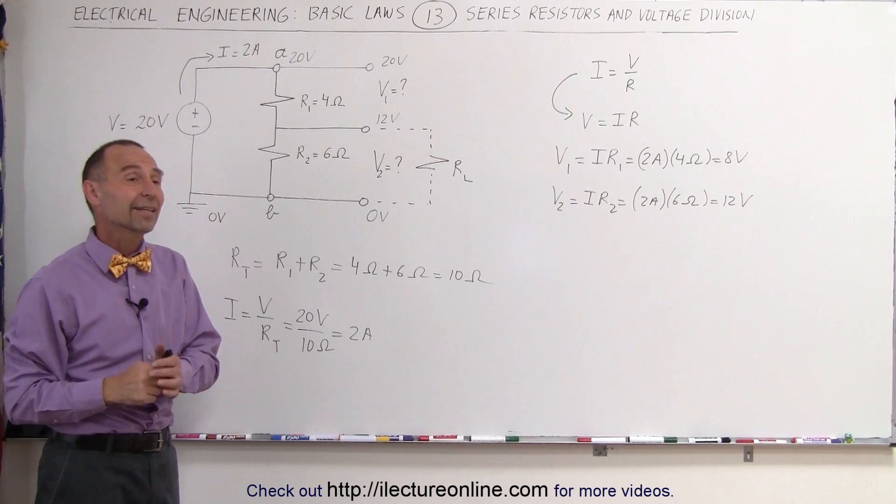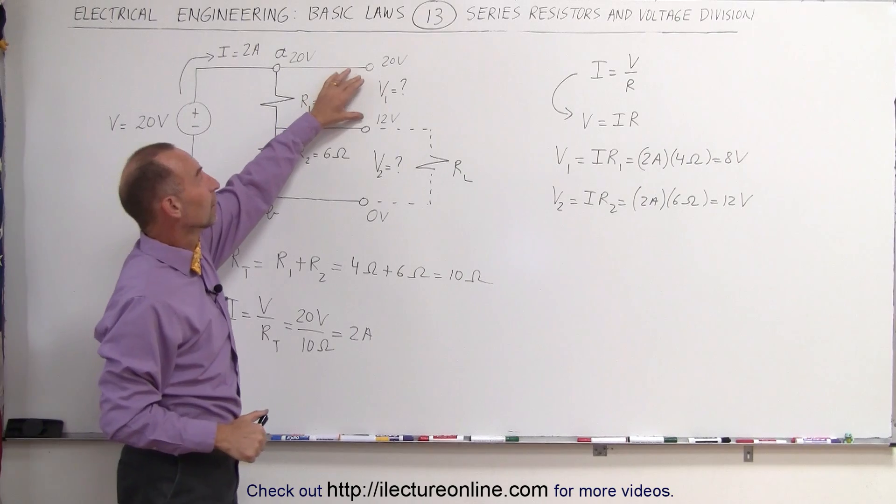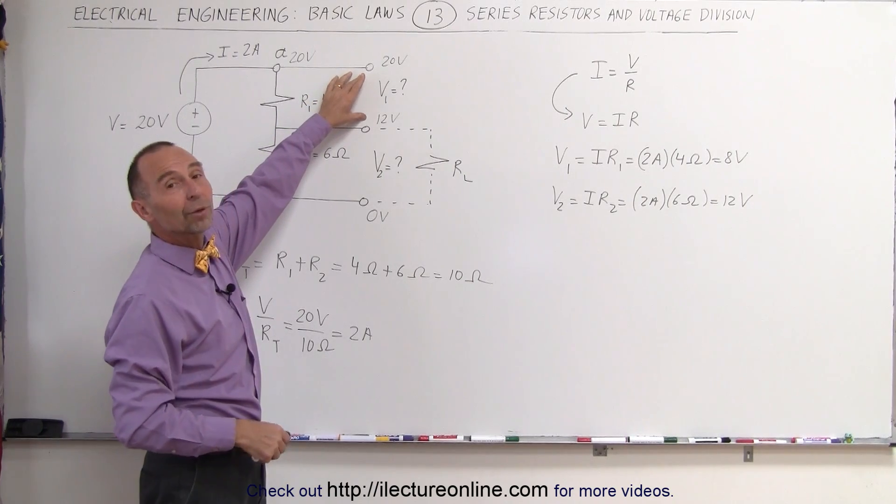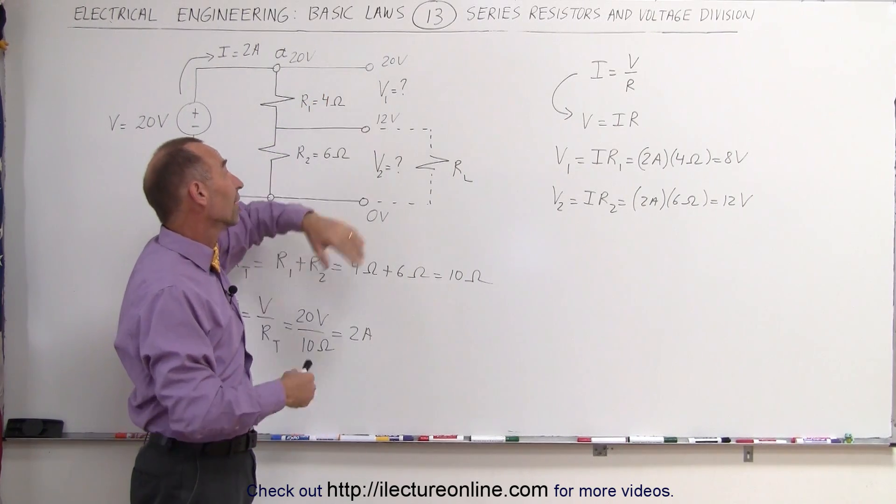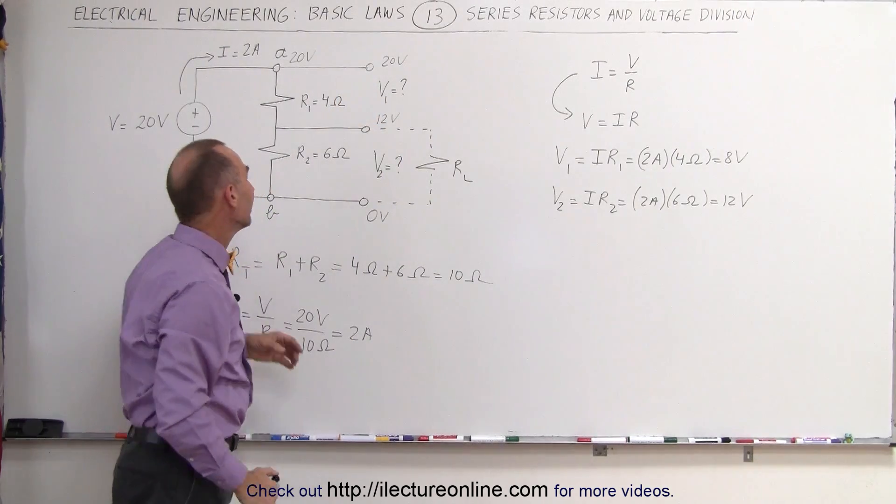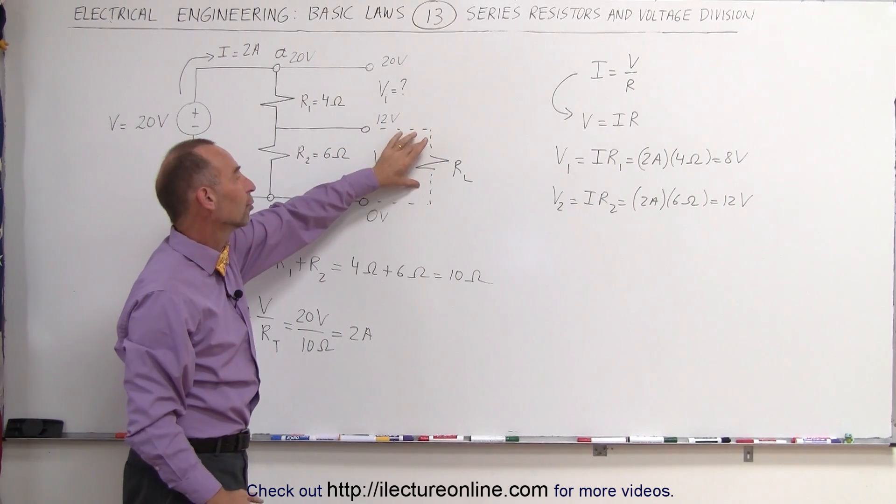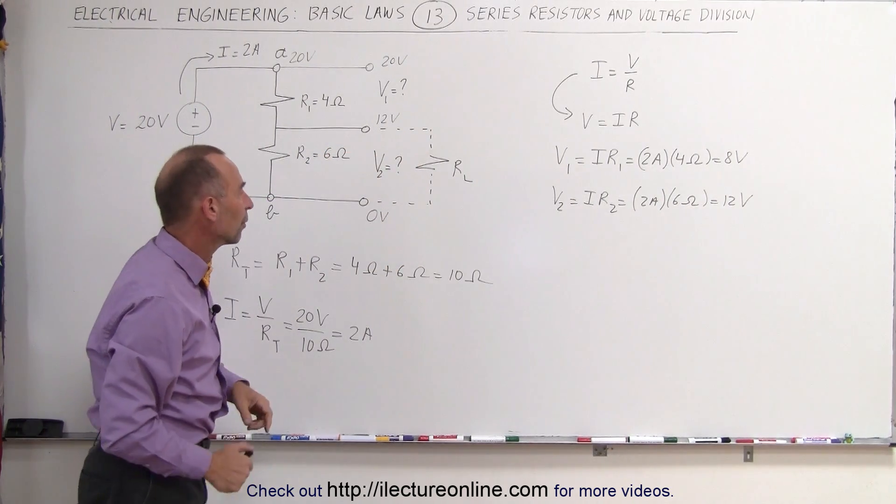This is the technique that is often used in circuitry on circuit boards. What do we do with the other 8 volts? Well, we can utilize the 8 volts or we can simply say we don't need it. We were just interested in taking a 20 volt source and bringing it down to 12 volts that we can apply to a load resistor. And that's what we're after.